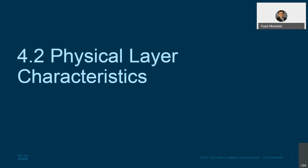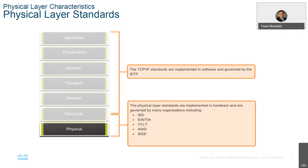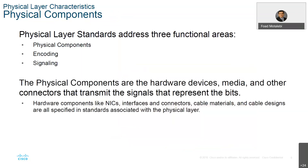Looking at the physical layer standards, it has certain standards implemented by many organizations — ISO, EIA, TIA, ITUT, ANSI, and IEEE. Each has a specific role in establishing standards, and all manufacturers must adhere to them. There are three functional areas to consider: physical components, encoding, and signaling.